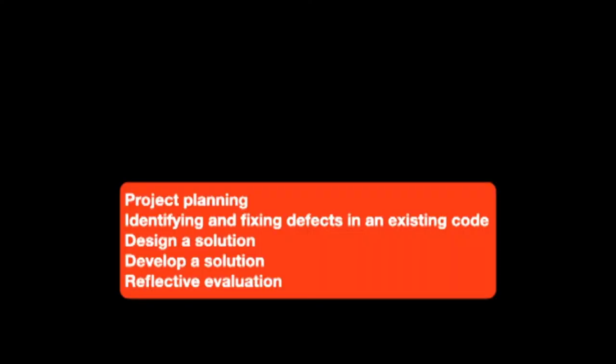On the employer set project, there are really five main areas: project planning, identifying and fixing defects in an existing code, design a solution, develop a solution, and then reflective evaluation to close off the project.